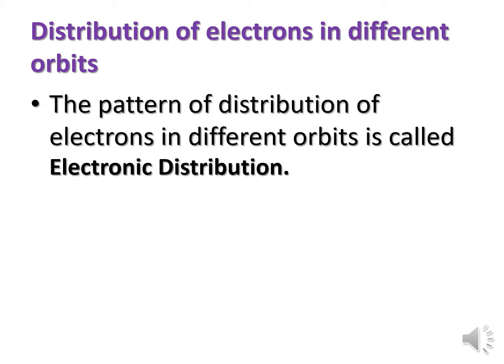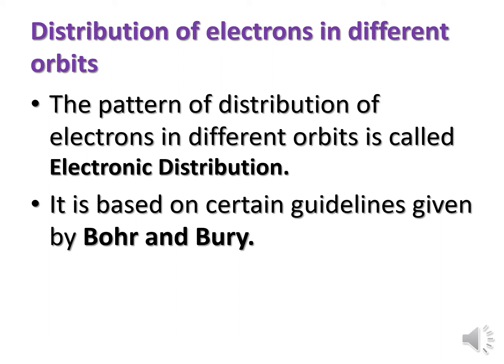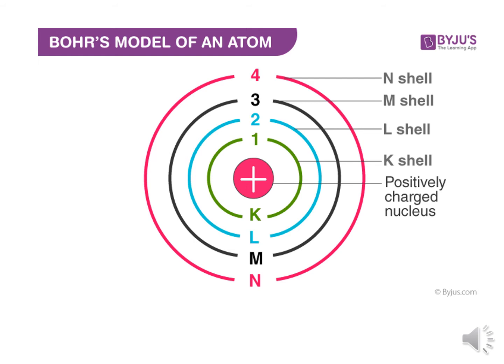The pattern of distribution of electrons in different orbits is called electronic distribution or electronic configuration. It is based on certain guidelines given by scientists Bohr and Bury. According to Bohr's model, the shells are energy levels in the extra nuclear portion. The nucleus is in the center, positively charged. The nearest shell to the nucleus is the K shell, next is L, then M, then N shell, and so on. In these shells the electrons revolve.